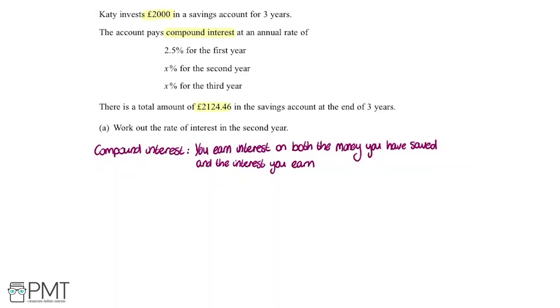I'm going to do this year by year, starting with year one. The question says KT starts with £2,000. In the first year, there's an interest of 2.5%, so we need to increase this by 2.5%. To do that, we times by 1.025.